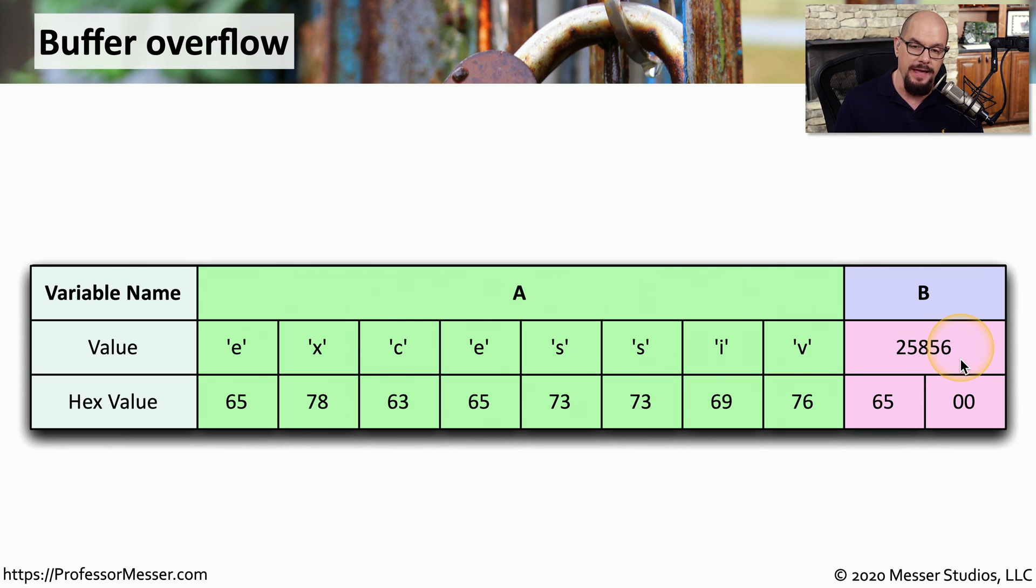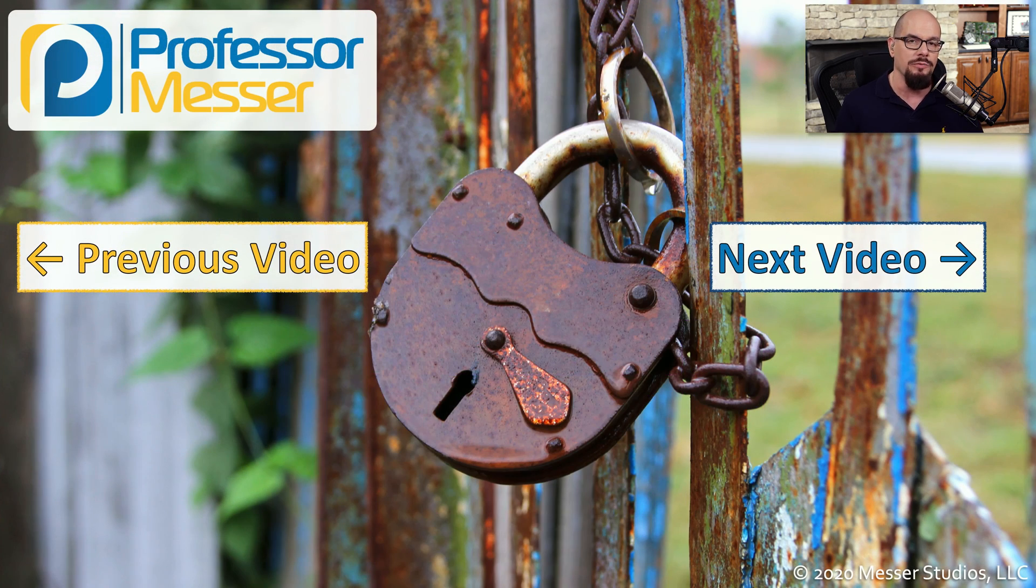And notice that it has changed the value of variable B. It may be that changing that value of variable B allows the attacker to gain elevated rights or a section of the operating system that they would not normally have. Or maybe it allows the attacker to be able to crash the system whenever they'd like, creating a denial of service by using this buffer overflow attack.